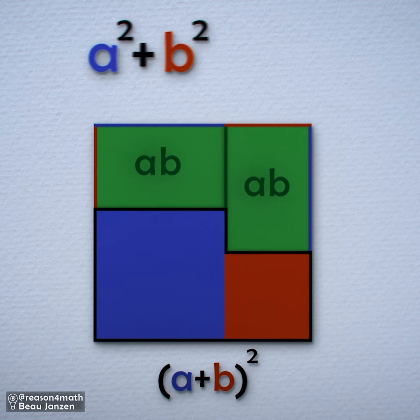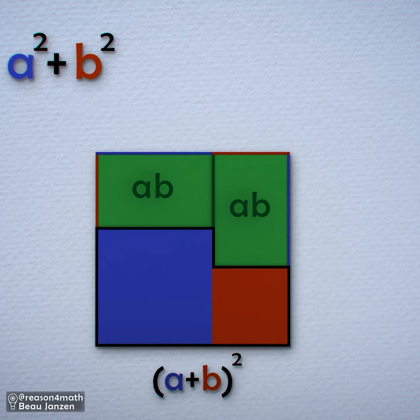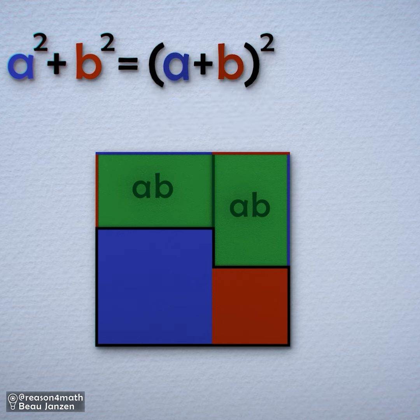We have two of these rectangles with an area of A times B. Therefore, we just found that the area of A squared plus B squared is equal to A plus B squared minus 2AB.